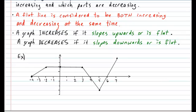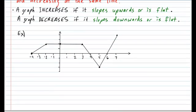Alright so let's take a look at this graph and determine which parts are increasing and which parts are decreasing. So I'm going to use a blue pen and using my blue pen I'm going to look for all the parts of the graph that increase. So I'm looking for all the parts that either slope upwards or is flat. Don't forget a flat line is considered increasing.